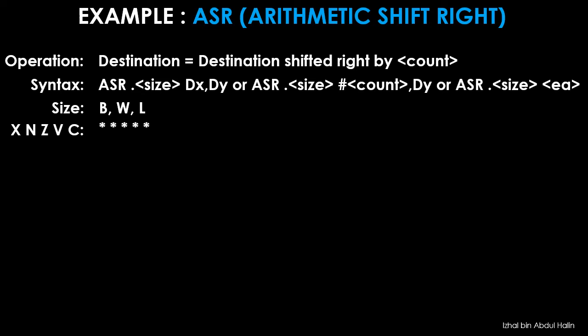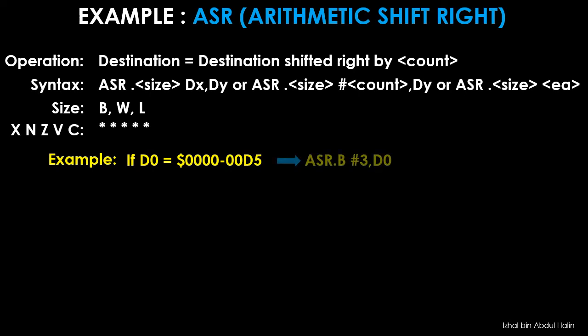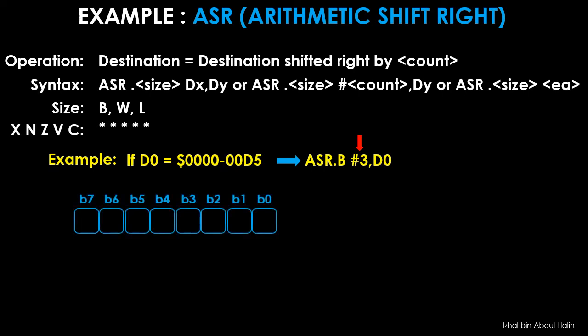In this example, register D0 initially contains the hexadecimal value D5. ASR.B 3, D0 is to be executed. Note that immediate data 3 specified in the instruction will shift the operand 3 bits to the right. During execution, register D0 is initially reconfigured as shown. The C and X flags are connected to the LSB of D0, and the MSB is fed back into itself. Now let's begin with the shift right operation.